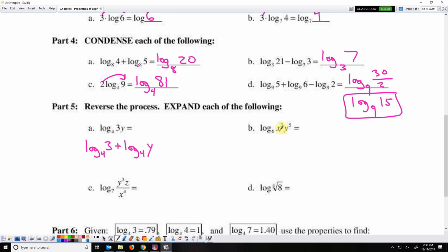Here we are multiplying again so we can split it up into two logarithms with addition. Log base 6 of x cubed plus log base 6 of y to the fifth. But we can also take that exponent and move it to the front of each logarithm. So our fully expanded form is 3 times log base 6 of x plus 5 times log base 6 of y.